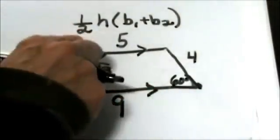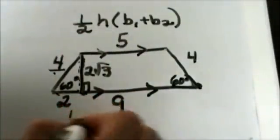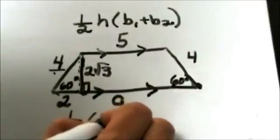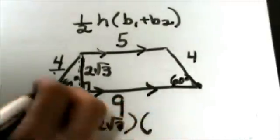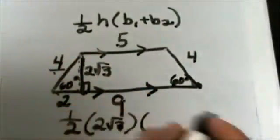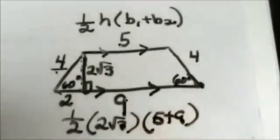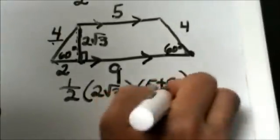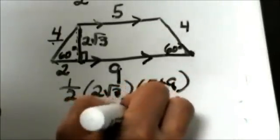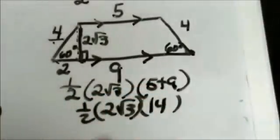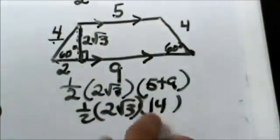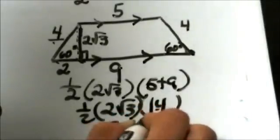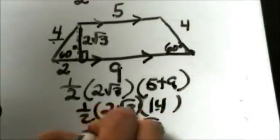Now we can use our formula: 1 half our height we just figured out was 2 square root of 3 times our bases added together, so the sum of the bases. The sum of the bases is 14 times 2 square root of 3 and you are going to multiply that product by half, so 2 times 14 is 28 square root of 3 all multiplied by half.